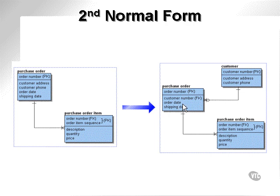That is second normal form. First normal form creates one-to-many relationships and second normal form actually creates many-to-one relationships.